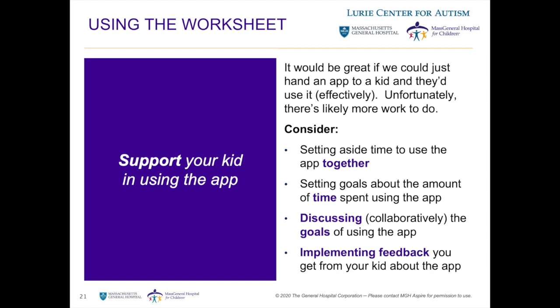By this point, you're getting close to the end of the process of picking out an app to use. The last variable, of course, is the person who will actually use the app. It's possible that all of your hard work pays off and the app is an immediate success, but it's likely that there is still some legwork to be done in supporting your child in actually using the app. Try to determine what level of support will be needed. With older children, you might support them by talking about why you're asking them to use it. For younger children, you might sit alongside them while they learn it, asking questions and offering help. Some parents might opt to have a therapist or teacher introduce the app. And if the app isn't working out, be prepared to reassess.